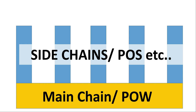Also, remember that only the main chain uses proof of work. The majority of the work on the blockchain is actually done by the side chains, which will each have their own consensus algorithm — each one can use proof of stake, dPoS, or anything they want. The main chain is responsible only for very basic transactions and transfer payments.